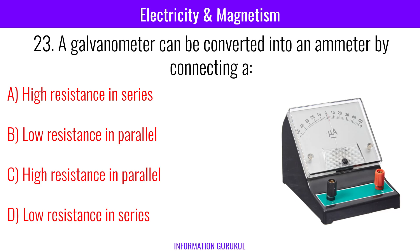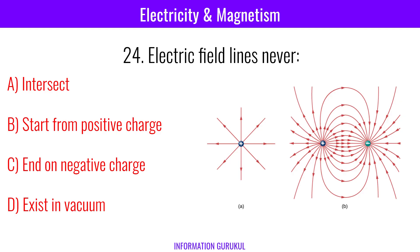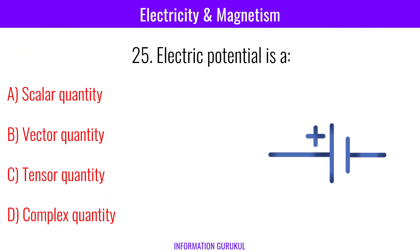A galvanometer can be converted into an ammeter by connecting a low resistance in parallel. Electric field lines never intersect. Electric potential is a scalar quantity.